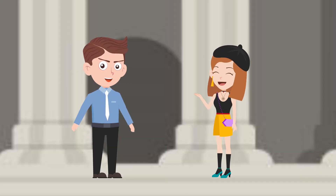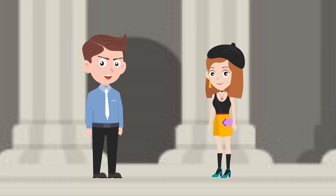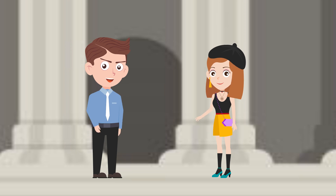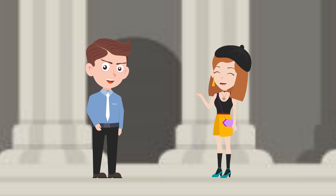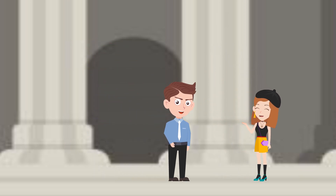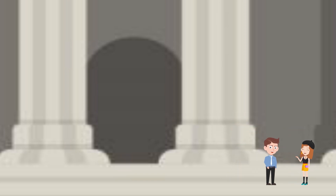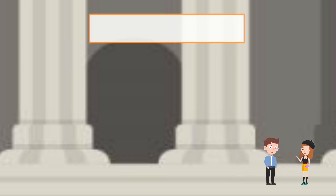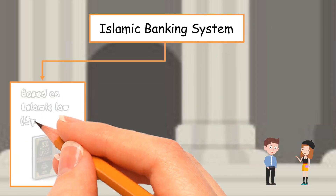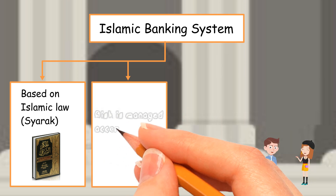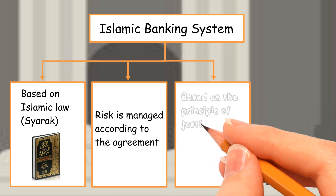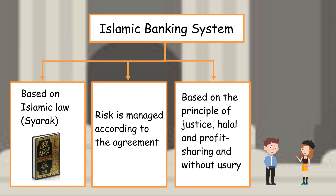Alice thanks David and says she now understands the saving accounts and how to calculate interests. She asks about Islamic banking. David explains: In Malaysia, there are conventional banking and Islamic banking systems. Islamic banking is based on Islamic law (Shariah). Risk is managed according to the agreement, based on the principle of justice, halal, profit sharing, and without usury.